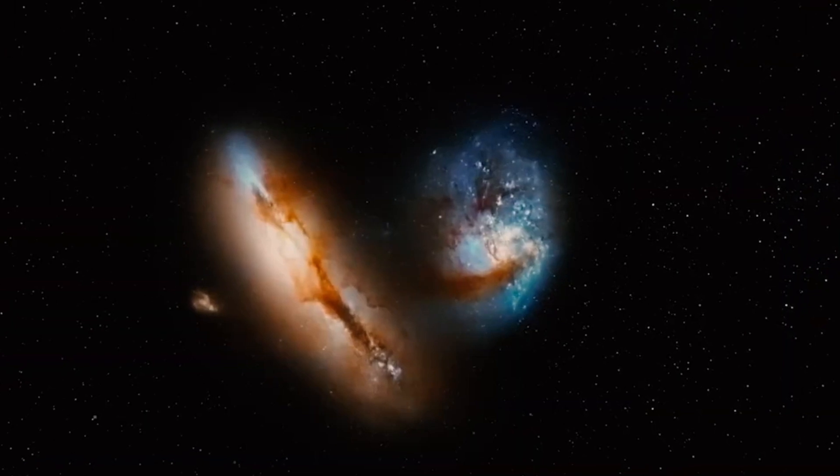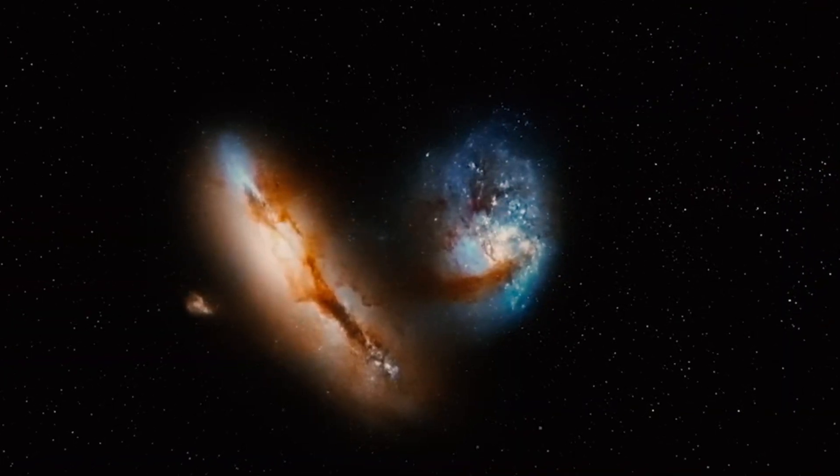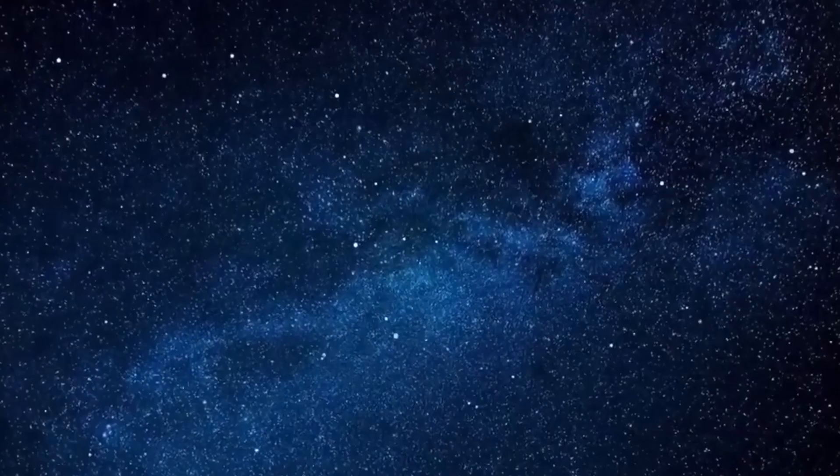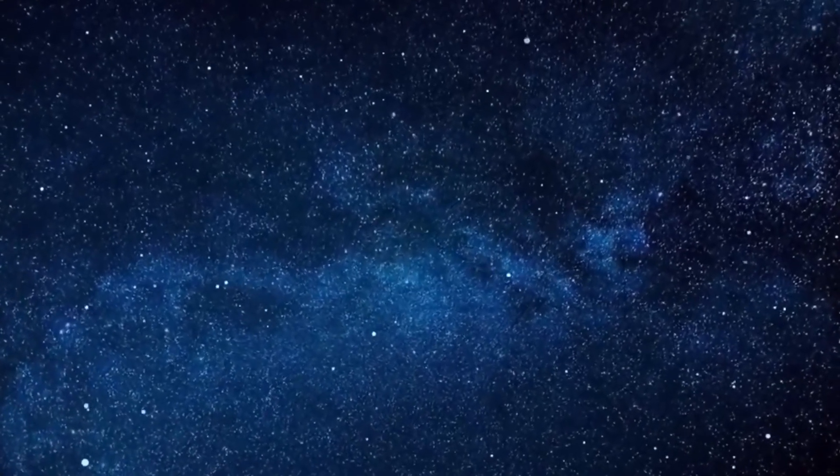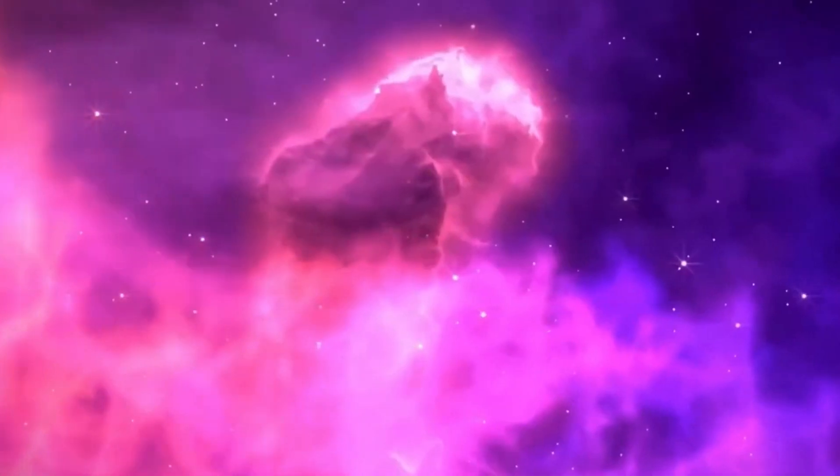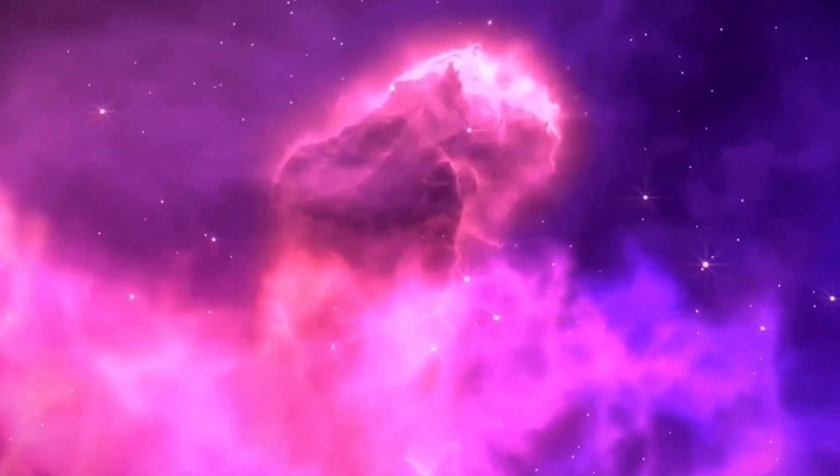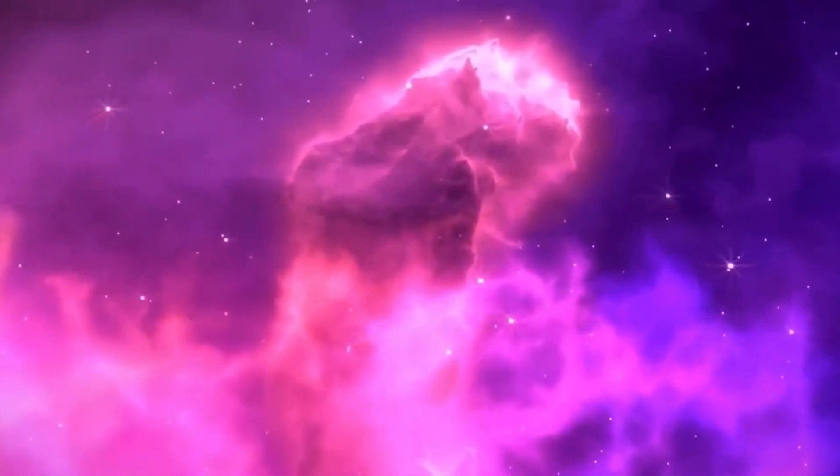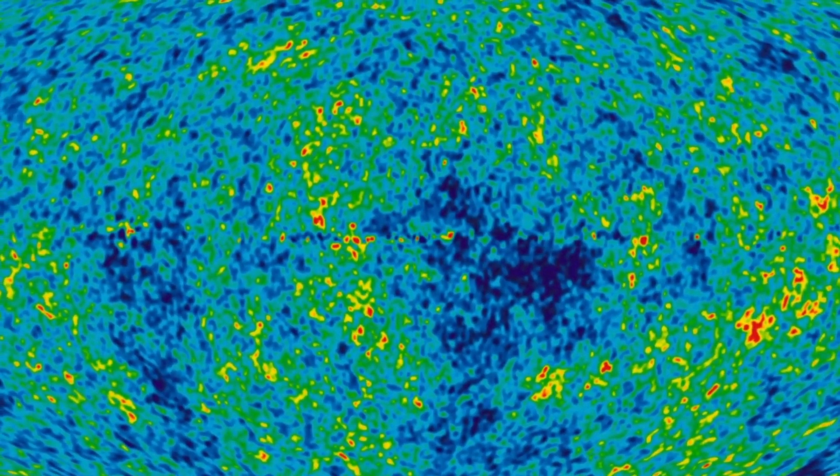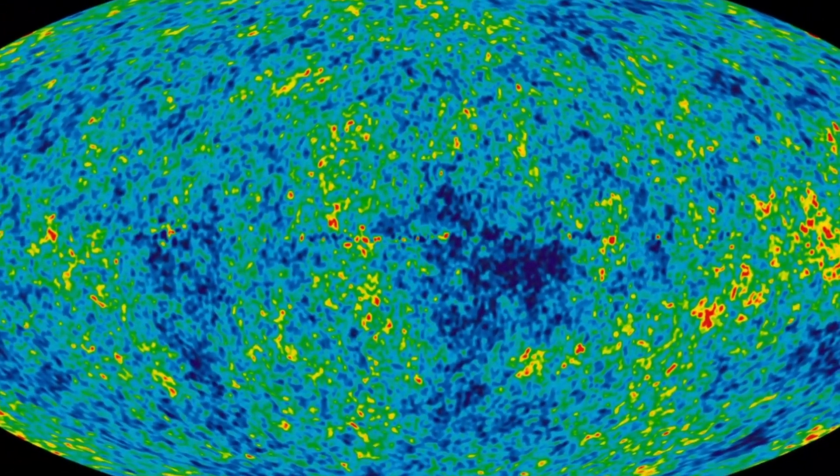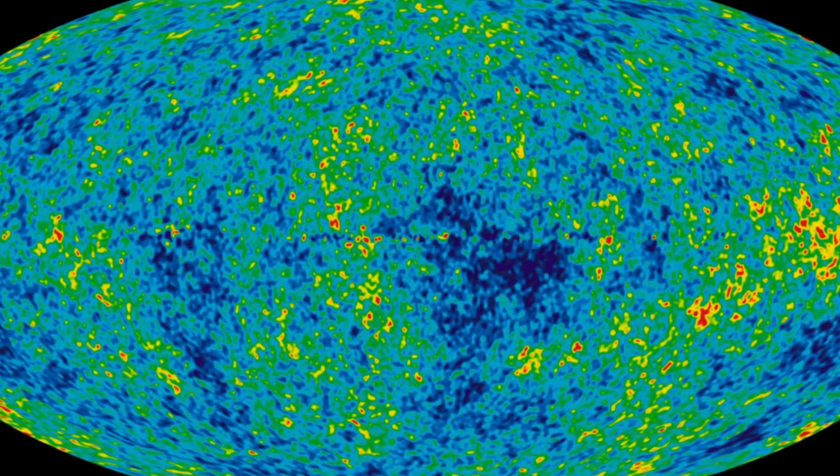These galaxies become visible to us through the light they once emitted. Telescopes capture the light and act as real-time machines. We look into the past as if through a tube and can gain vivid impressions of how the universe looked at the beginning of time through light signals that are billions of years old. In addition to light, there is another major indicator in the universe, the cosmic background radiation.